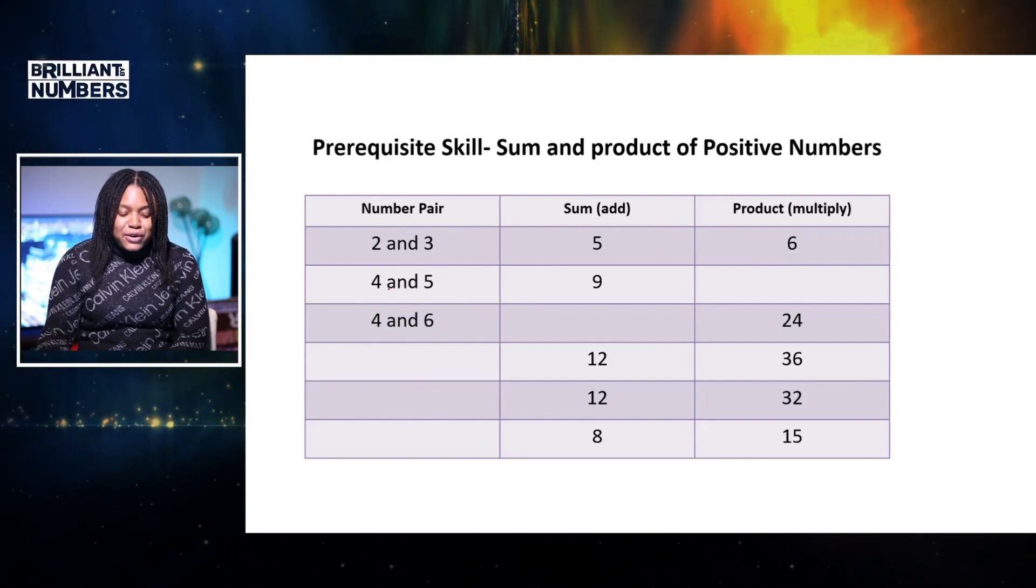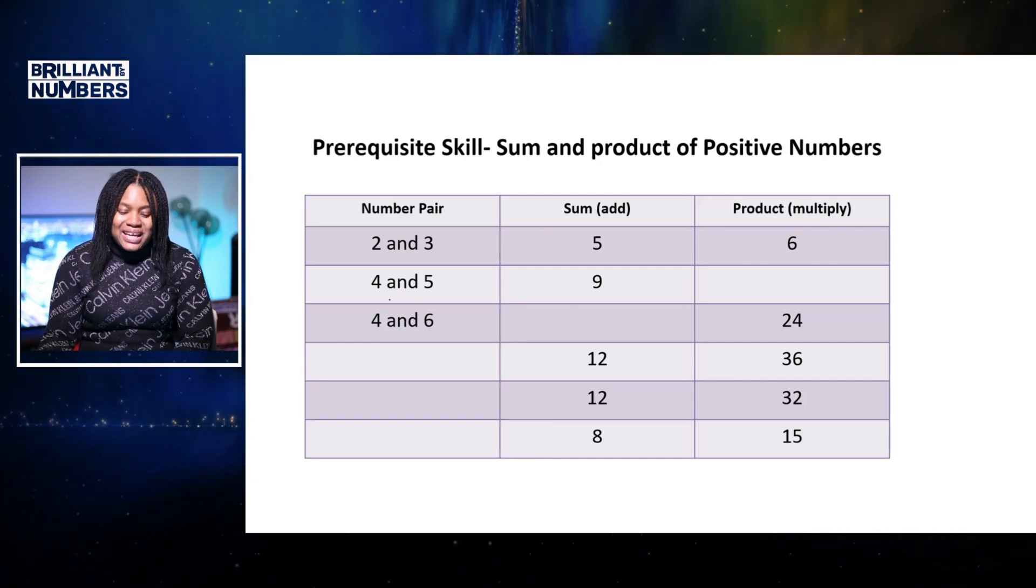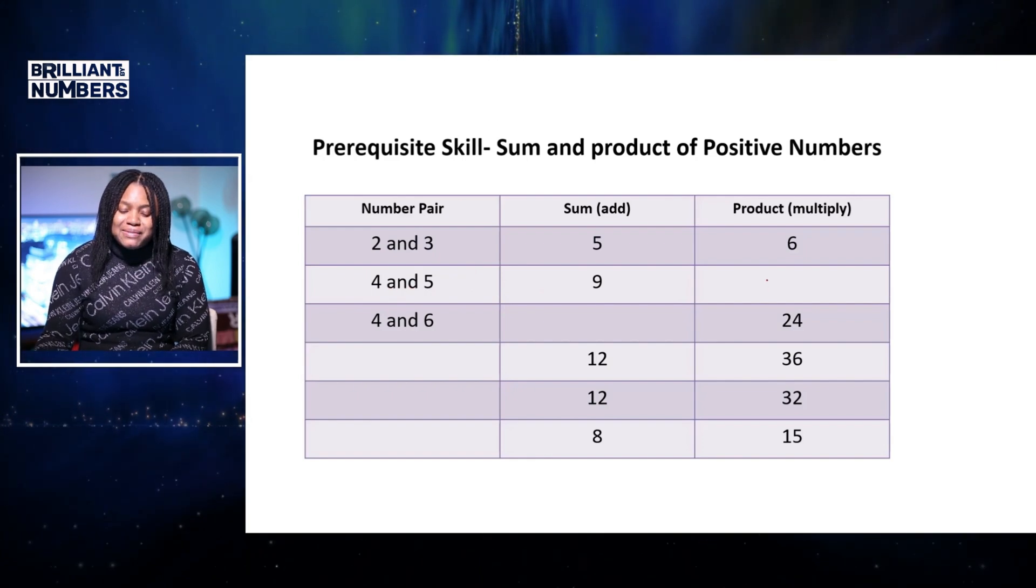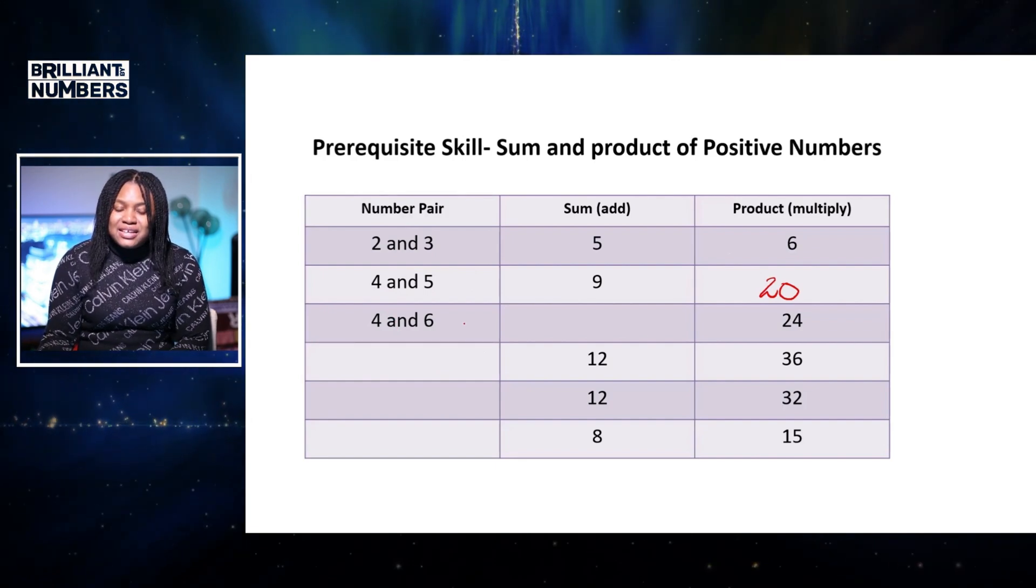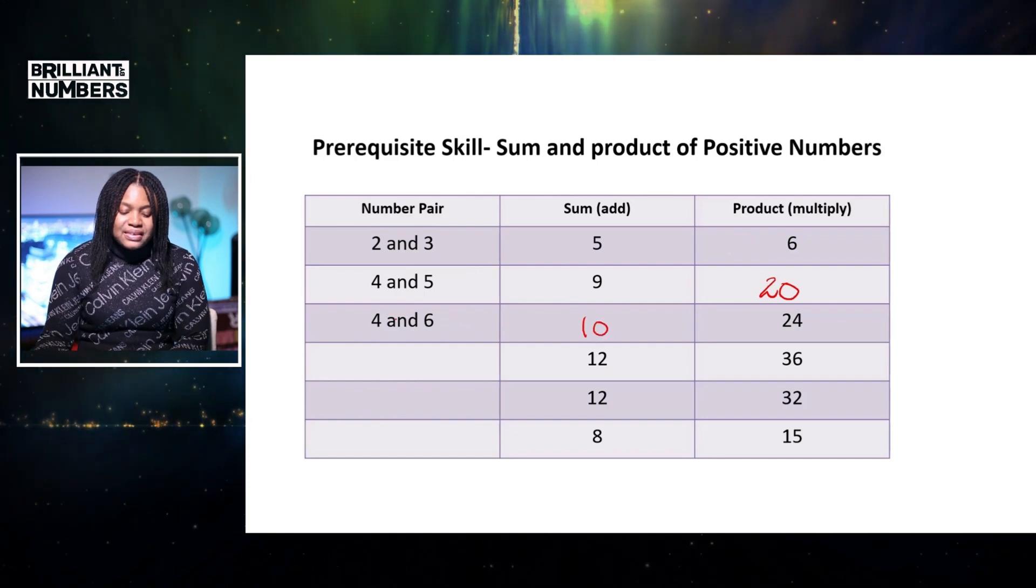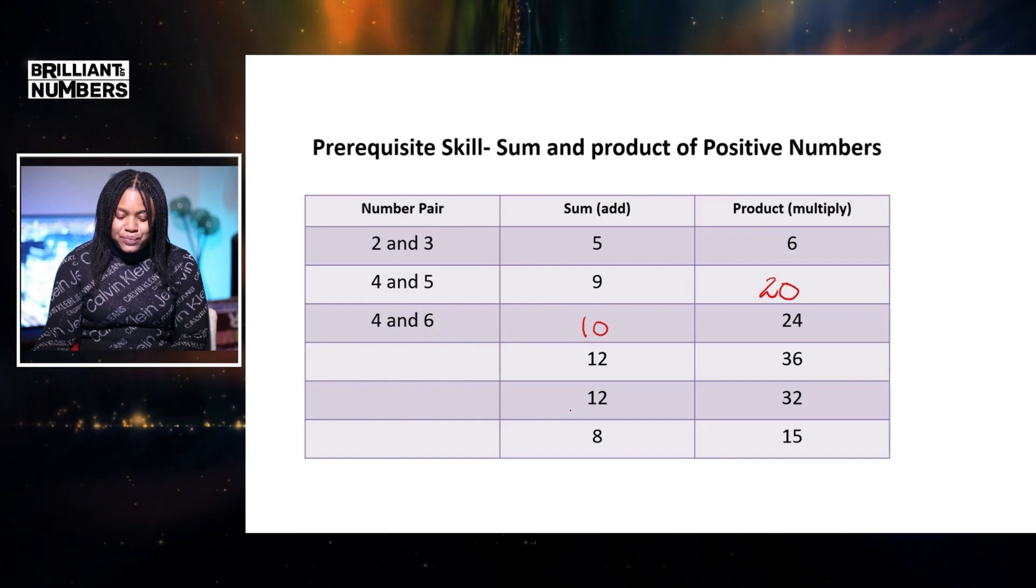So I started the second one. 4 and 5 added together, we get 9. But multiplying them together, 4 times 5 gives us 20. So I'll just fill that in. We've got 4 and 6. So the sum of 4 and 6 is 10. And when we multiply them together, the answer is 24.